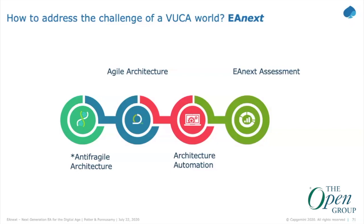We took those ideas and baked them into our current enterprise architecture maturity assessment, which is based on TOGAF 9.2 plus some inner learnings from Capgemini. We've also added these three additional pillars. What was discussed in the prior session about automation can't be stressed enough — we've got to be able to go a lot faster than we do today.